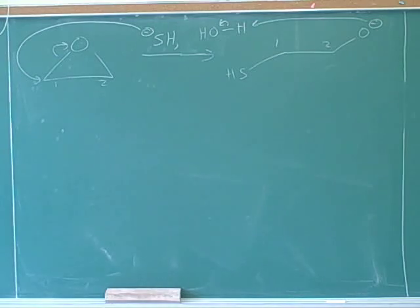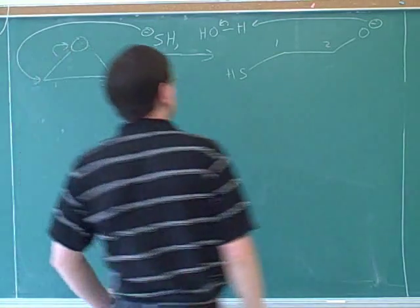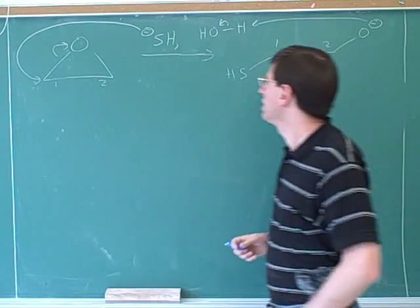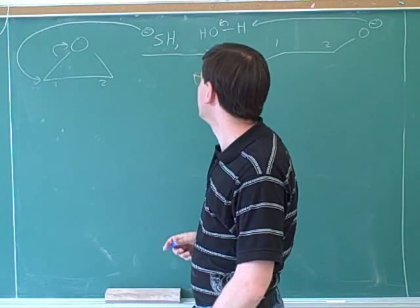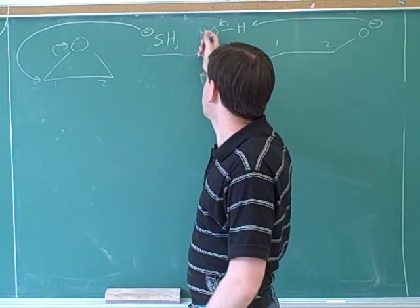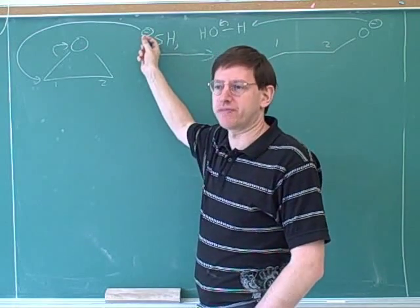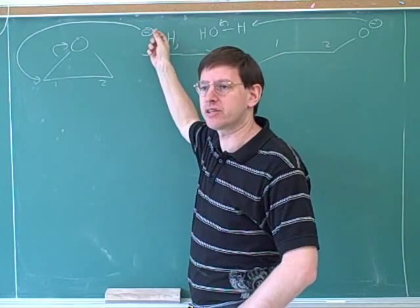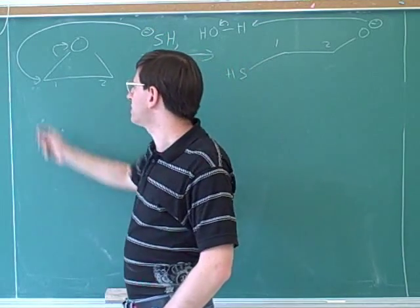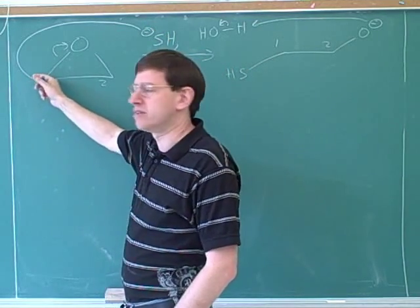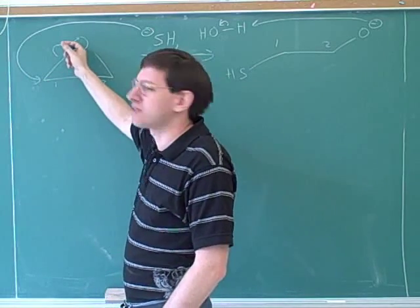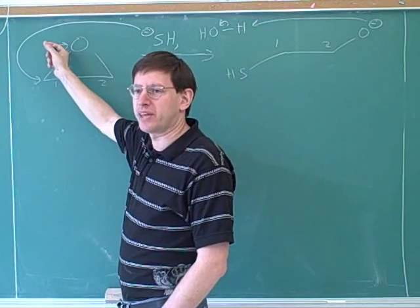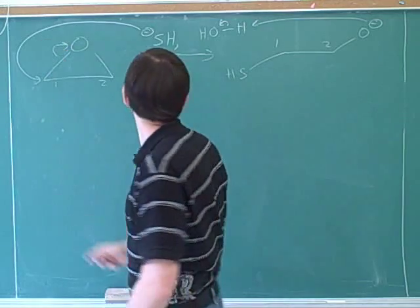Looks like you came up with the right mechanism and products there. Who's our nucleophilic atom now? More nucleophilic than water is this negative charge on the sulfur, so we should use the negative charge on the sulfur. We have to pay attention to the charges — those are the reactive atoms. We already know this is an electrophilic carbon with a delta positive, and we can use this as a leaving group because of the ring strain. You might have forgotten to put in this arrow, but then you went back and put that in to show that this is a leaving group.